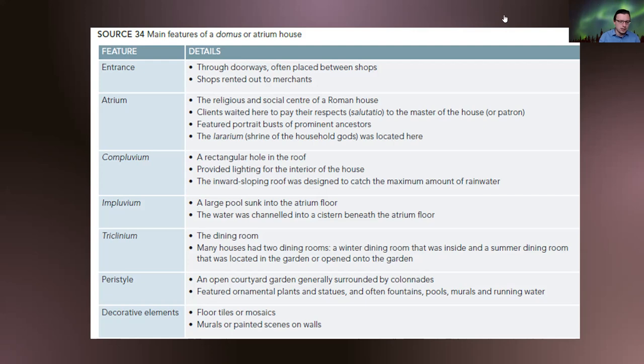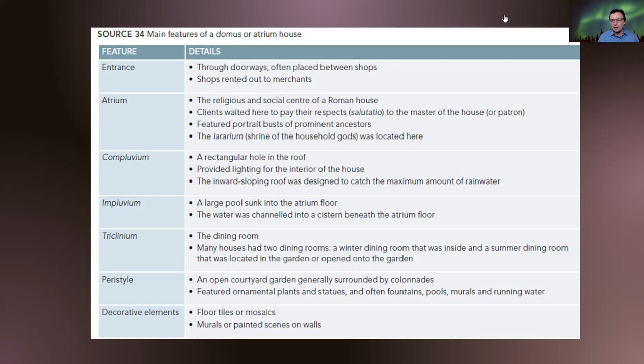The decorative elements include floor tiles or mosaics, and murals or painted scenes on walls to display the allegiance of that particular household — what gods they favour — or even just to display their personal wealth. Here we have our display of what the ideal household, or typical domus or atrium house at Pompeii, looks like.